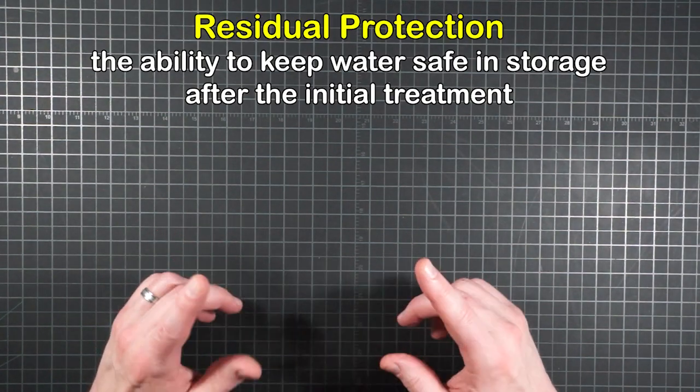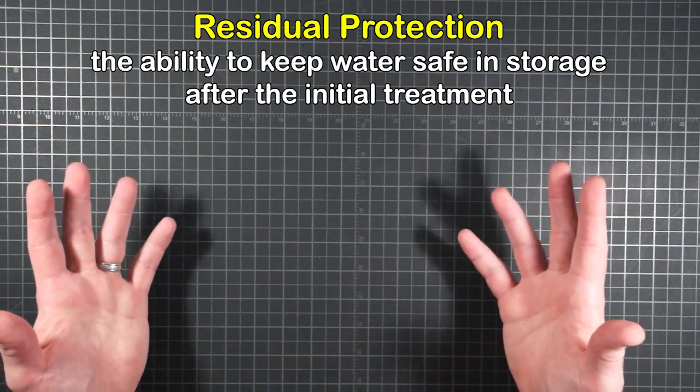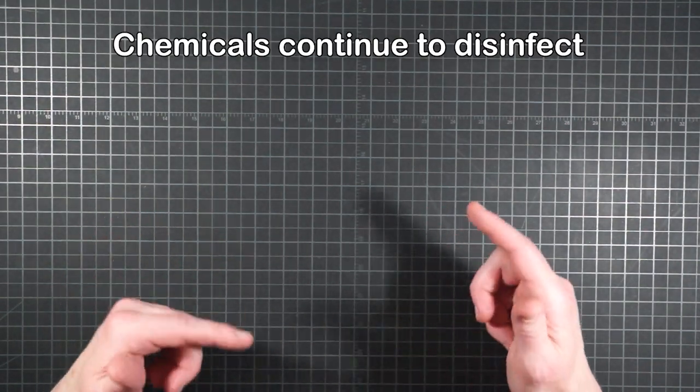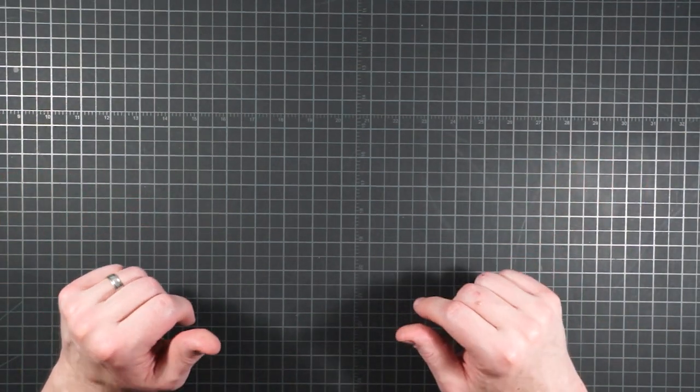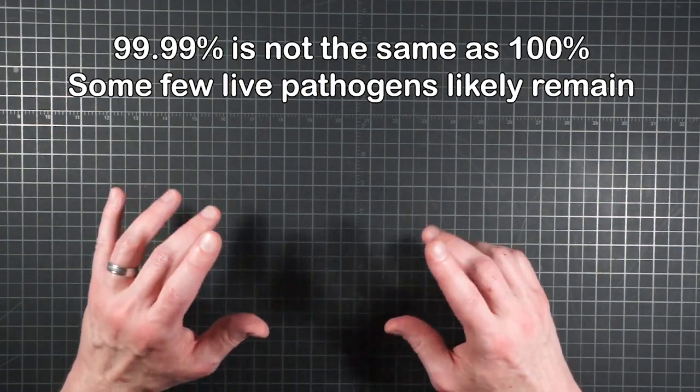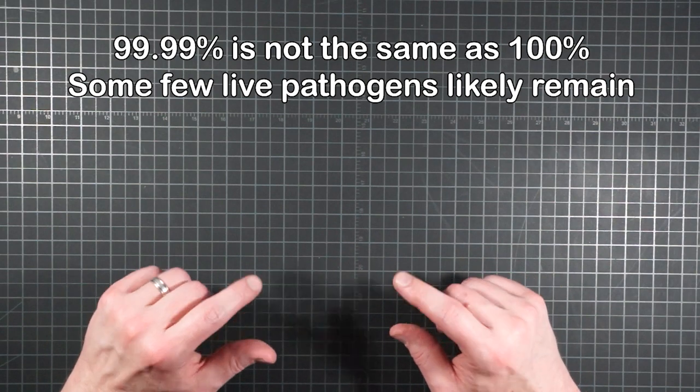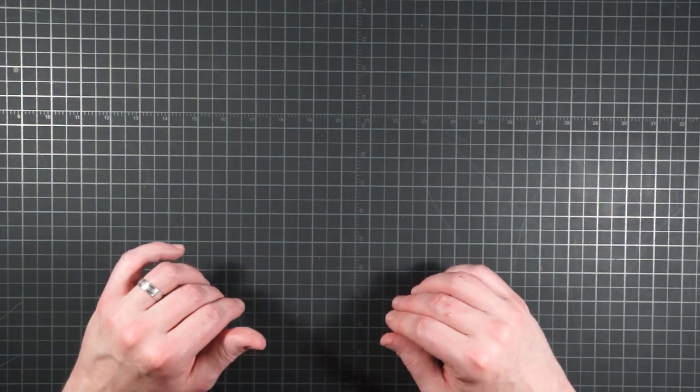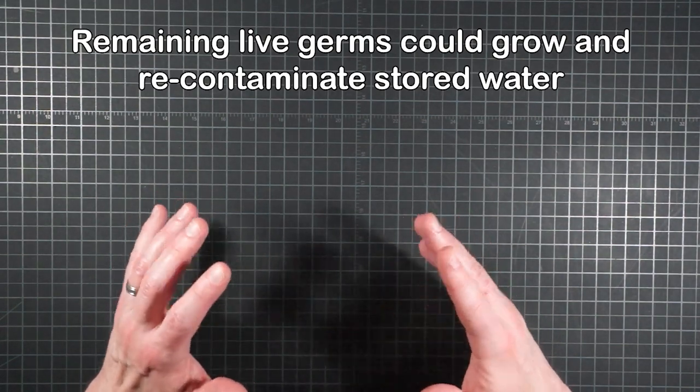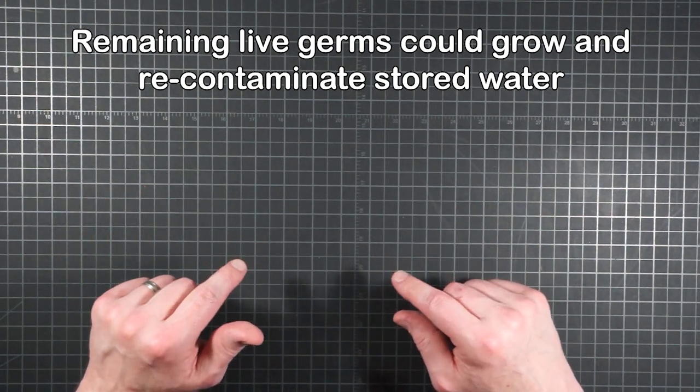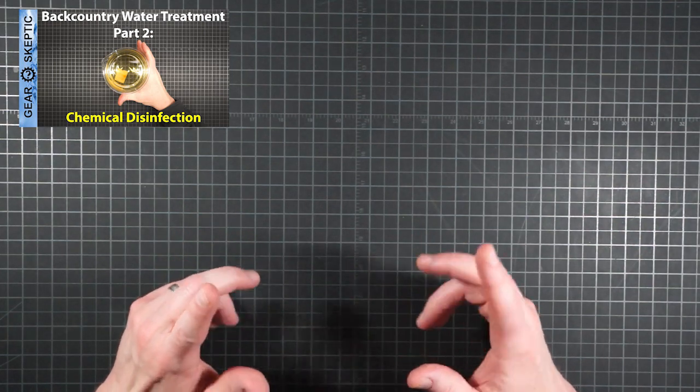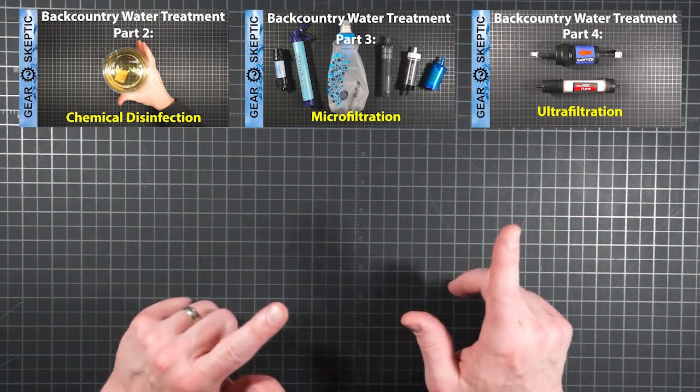When comparing chemical disinfection to UV, it's often pointed out that a key difference is the presence of any residual protection. With chemicals, even after the target treatment time has elapsed, the active ingredients remain. They will continue to disinfect at ever increasing log removal values the longer you let the concoction brew. That means it also provides you with some residual protection against the reinfection of your water. Remember that these reduction values are all of the 99.99 sort? They're never truly 100%. The probability persists that some few live pathogens will always be left over. For more on chemical disinfection, see Part 2. And for discussion of minimum infective dose plus statistics on the probability of infection before and after treatment at various log removal rates, see Parts 3 and 4.